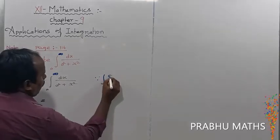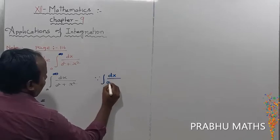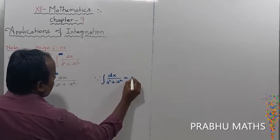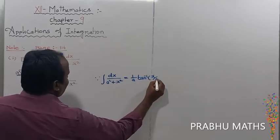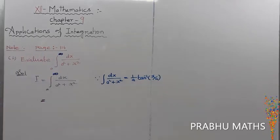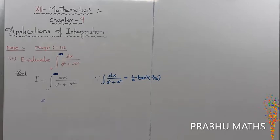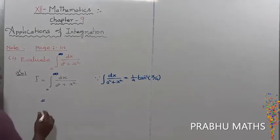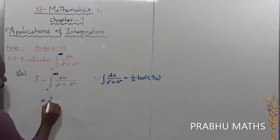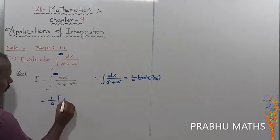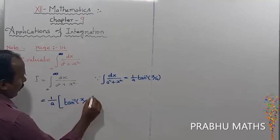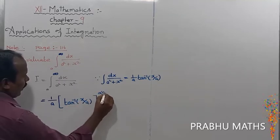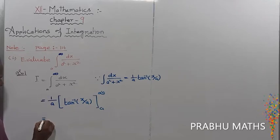The standard form for this integral is: the integral of dx divided by a squared plus x squared equals 1 over a times tan inverse of x over a. So applying this, we get 1 over a times tan inverse of x over a, evaluated from a to infinity.